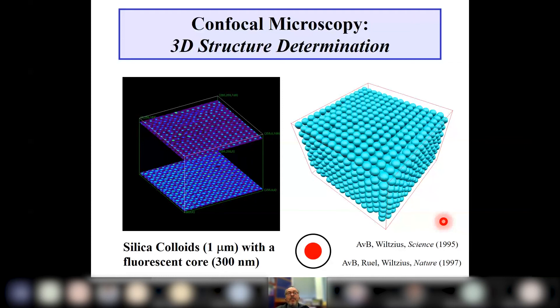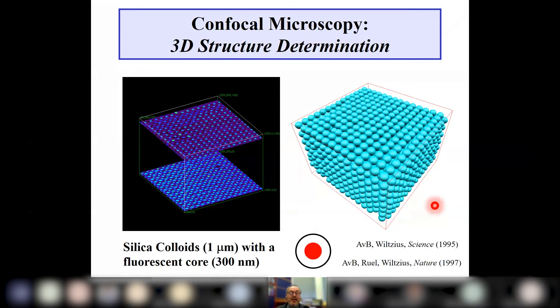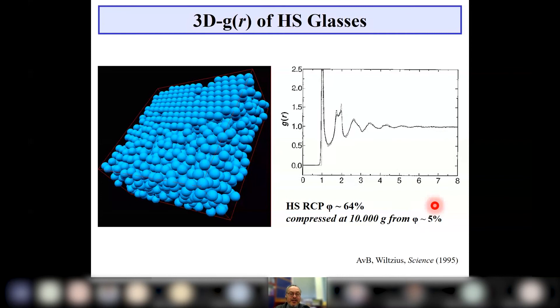The ability to investigate structures in real space — whether atomic, nanoscale, or colloidal scale — is very important for properties, because mechanical and optical properties are determined not only by regularity but also by defects. A missing particle, a point defect, can cause additional scattering or altered properties that are very difficult to analyze with scattering methods, since scattering is sensitive to regularity, not irregularities. This is a strong reason to image and analyze things at the single particle level.